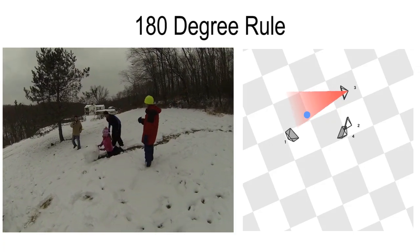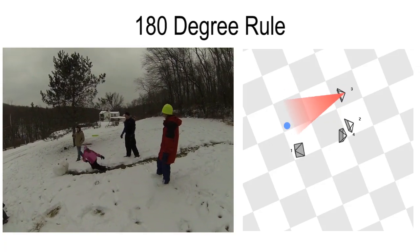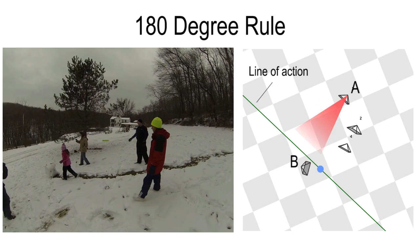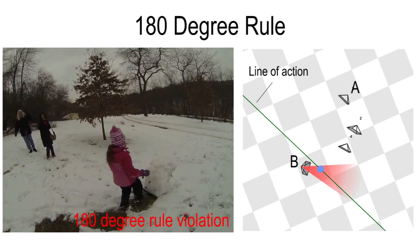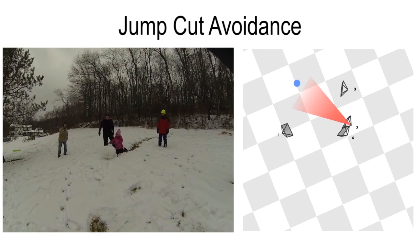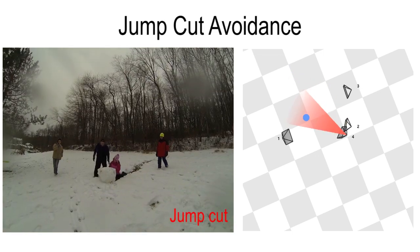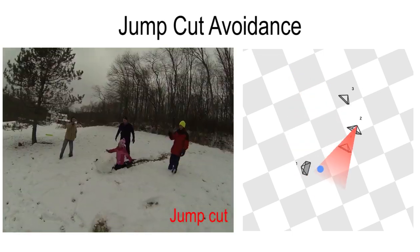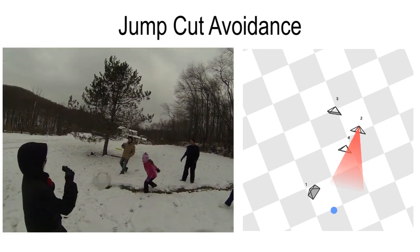In conjunction with joint attention, we use rules of cinematography to define valid cuts between cameras. The 180-degree rule prevents the camera from crossing the line of action. Here, the trajectory of the snowball forms the line of action. The transition from camera A to camera B is confusing as the motion of the snowball appears to reverse. A jump cut involves a cut between nearby cameras, resulting in the appearance of jerky camera motion rather than a cut between cameras.